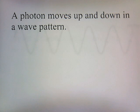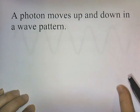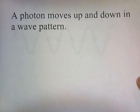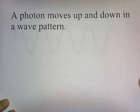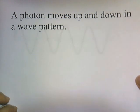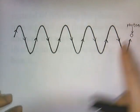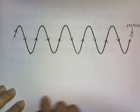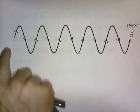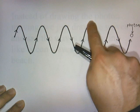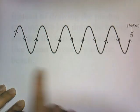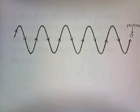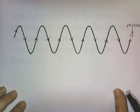A photon moves up and down in a wave pattern. Here's our photon, and it's moving from left to right. As it moves from left to right, it sort of oscillates up and down and creates a wave. This is the wave pattern created by the photon as it moves.